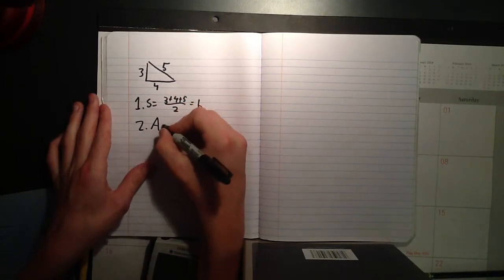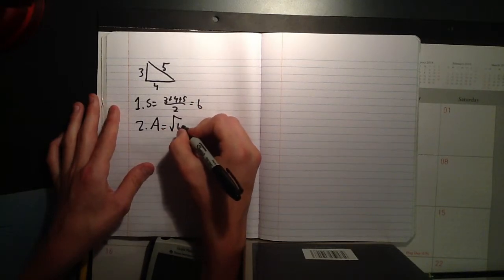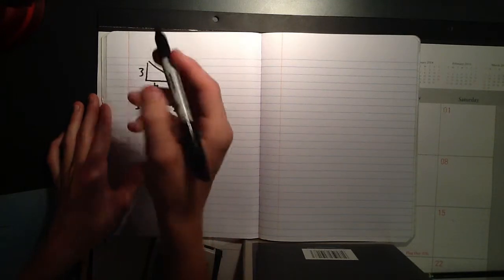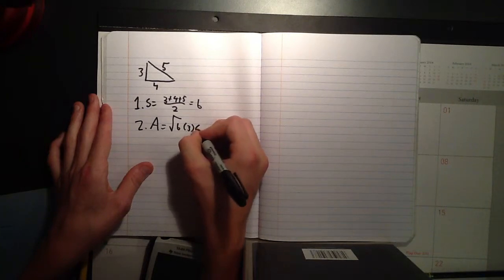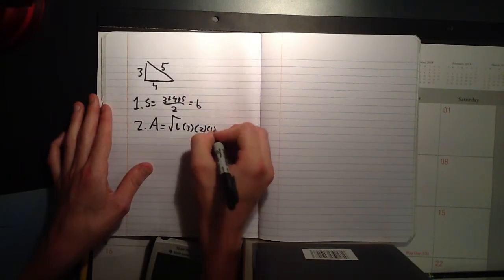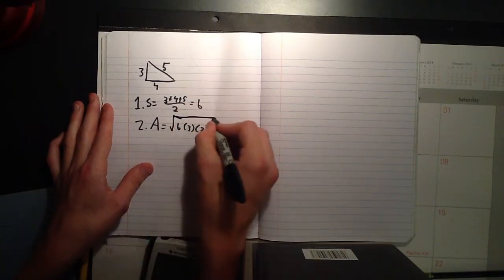And, so then we'll go to two. And, we have area equals root six times six minus a. We'll call that three a. Six minus three, three. Times six minus four, two. Times one. Oh, wasn't that factorial? Six times three factorial. That's cool.